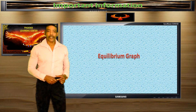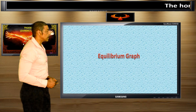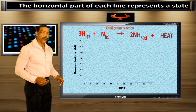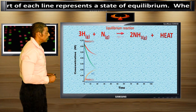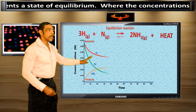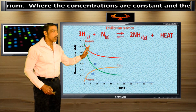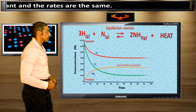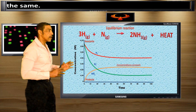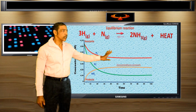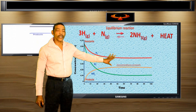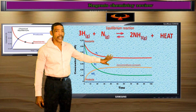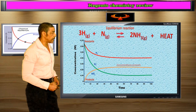At some point you may be required to interpret an equilibrium graph. An equilibrium graph shows how the equilibrium concentrations of the products and the reactants are related. The horizontal part of each line represents a state of equilibrium where the concentrations are constant and the forward and the reverse reaction rates are the same.